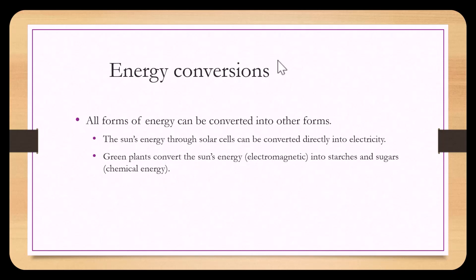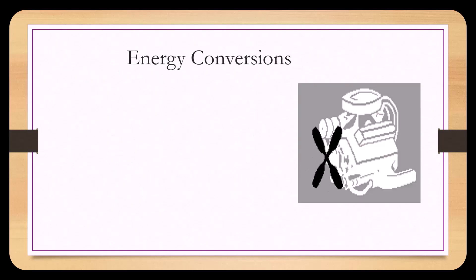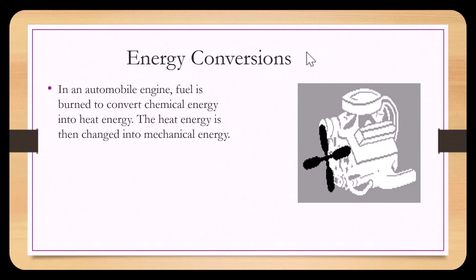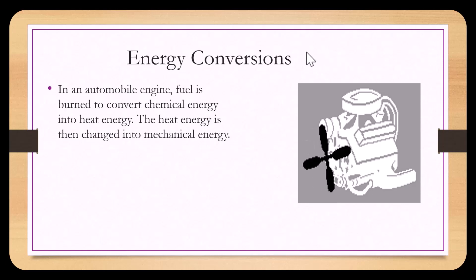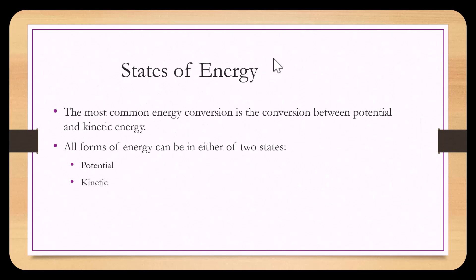The sun's energy through solar cells can be converted directly into electricity. Green plants convert the sun's electromagnetic energy into starches and sugars, which is chemical energy. In an automobile engine, fuel is burned to convert chemical energy into heat energy, and then heat energy is changed into mechanical energy. An energy state is energy with specific conditions that is often described relatively — meaning compared to something else, usually described as energy that is higher or lower.